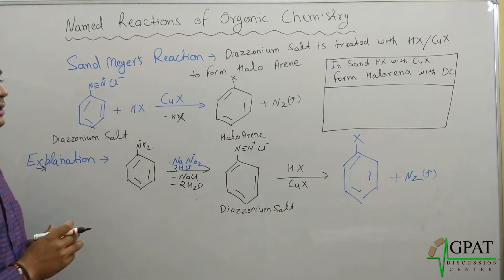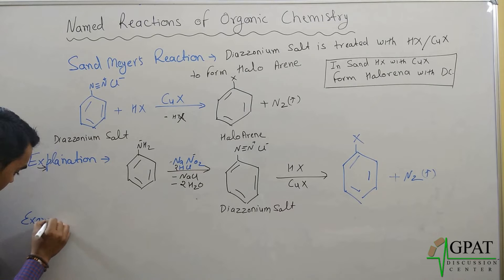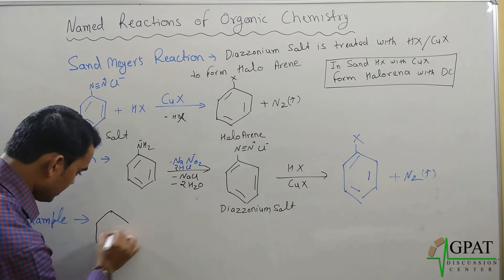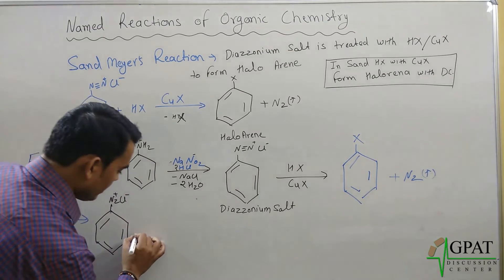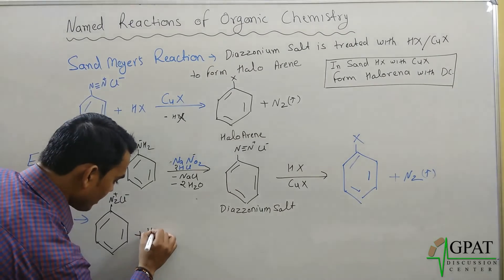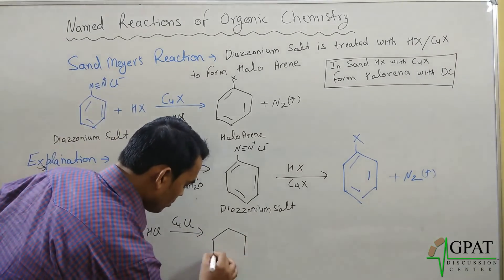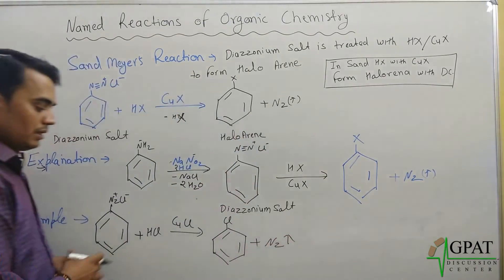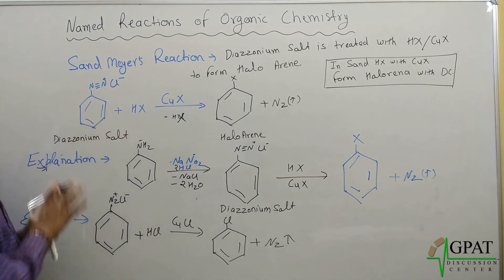Now take an example. Suppose we have a diazonium salt. When reacted with HCl in the presence of copper chloride, chlorobenzene will be formed and nitrogen gas will be evolved. If we use hydrogen bromide in the presence of copper bromide, then bromobenzene will be formed. So this is the Sandmeyer's reaction. Thank you.